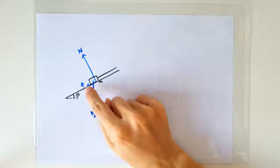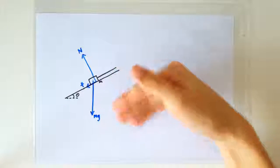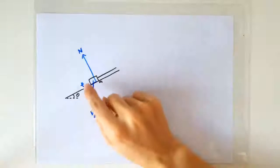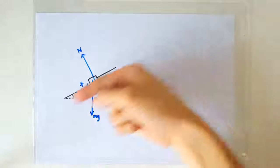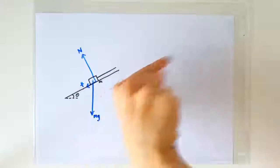Next, we have the frictional force, which must act parallel to the two surfaces. Now, should the frictional force be acting downward along the slope or upward along the slope?